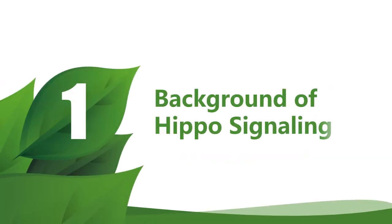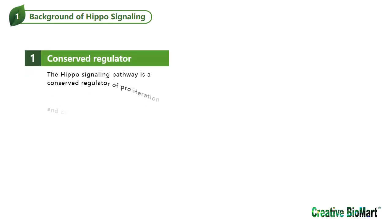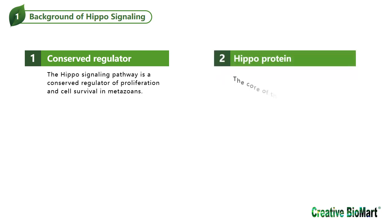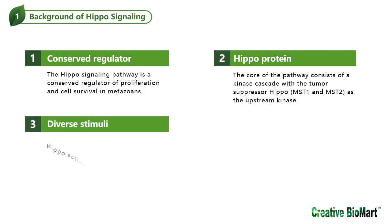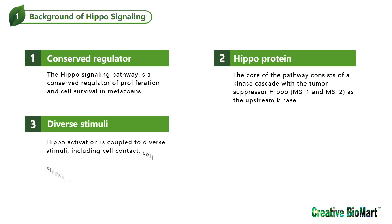Background of Hippo Signaling Pathway. The Hippo signaling pathway is a conserved regulator of proliferation and cell survival in metazoans. The core of the pathway consists of a kinase cascade with the tumor suppressor Hippo, and its mammalian orthologues MST1 and MST2, as the upstream kinase. Hippo activation is coupled to diverse stimuli, including cell contact, cell stress, and growth factor receptor signaling. These stimuli engage the Hippo pathway via multiple different signaling mechanisms that are cell type and cell context dependent.